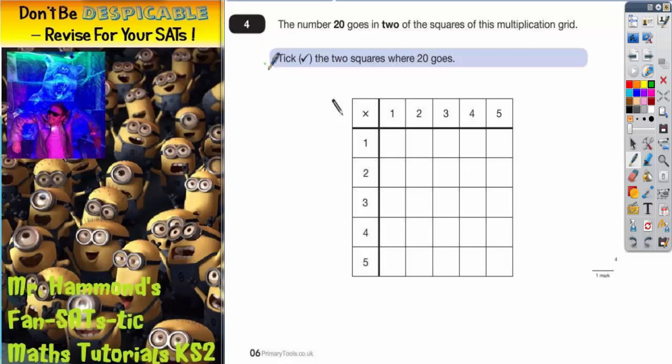Question 4 is all about times tables. It says the number 20 goes in two of the squares in this multiplication grid. Tick the two squares where 20 goes. This is all about factors - what numbers multiply together.